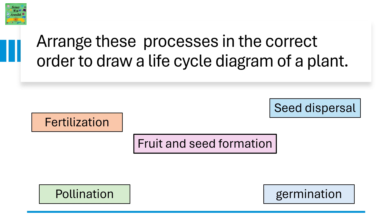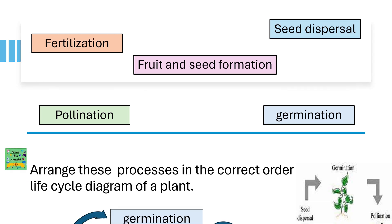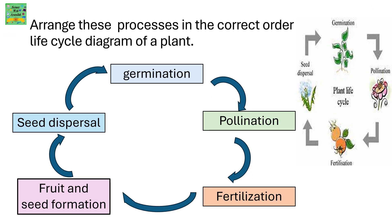Arrange these processes in the correct order to draw a life cycle diagram of a plant. The correct order for the life cycle of a plant is seed dispersal, germination, pollination, fertilization, and fruit and seed formation.